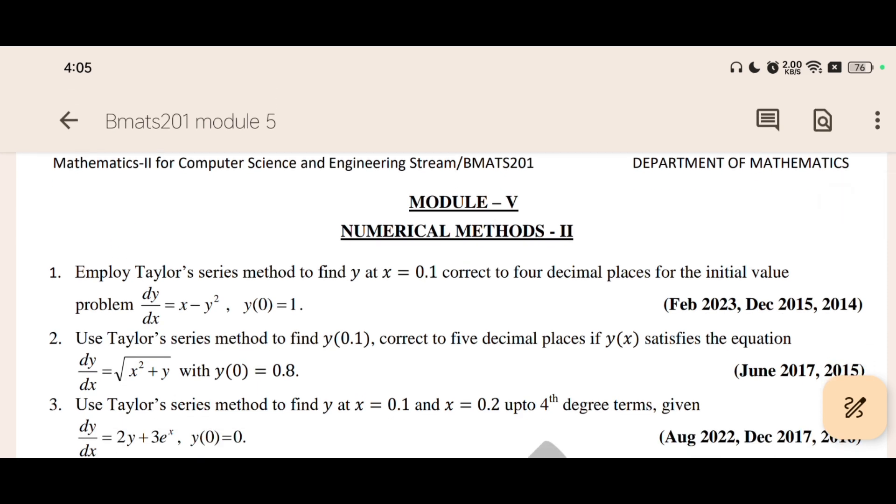If you are unable to practice, let me tell you what you have to do. See here, the first question from module 5: employ Taylor series method to find y at x = 0.1 correct to four decimal places for the initial value problem dy/dx = x - y², y(0) = 1. On the right hand side, you can see February 2023, December 2015, and 2014. This question has been repeated three times.